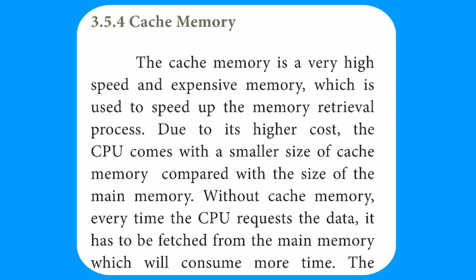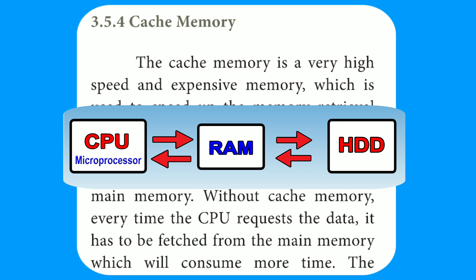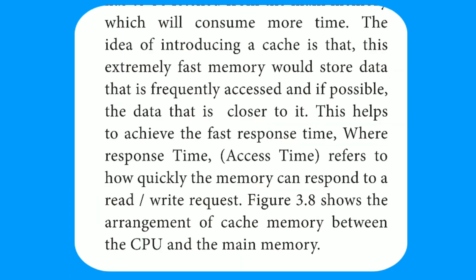Without cache memory, every time the CPU requests data, it has to be fetched from the main memory, which will consume more time. Cache memory stores the data that is frequently accessed and, if possible, data that is closer to it — data likely to be needed soon by the CPU.